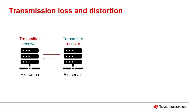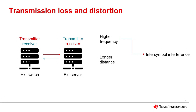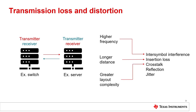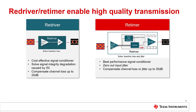This signal distortion will cause the system to fail Ethernet standard compliance and create poor interoperability with network equipment. A higher data rate will cause greater inter-symbol interference. Longer distance will cause greater insertion loss. Greater layout complexity will cause crosstalk, reflection, and random jitter in the data path. Redriver and Retimer signal conditioners are emerging as the necessary solution to enable clear, clean communication.